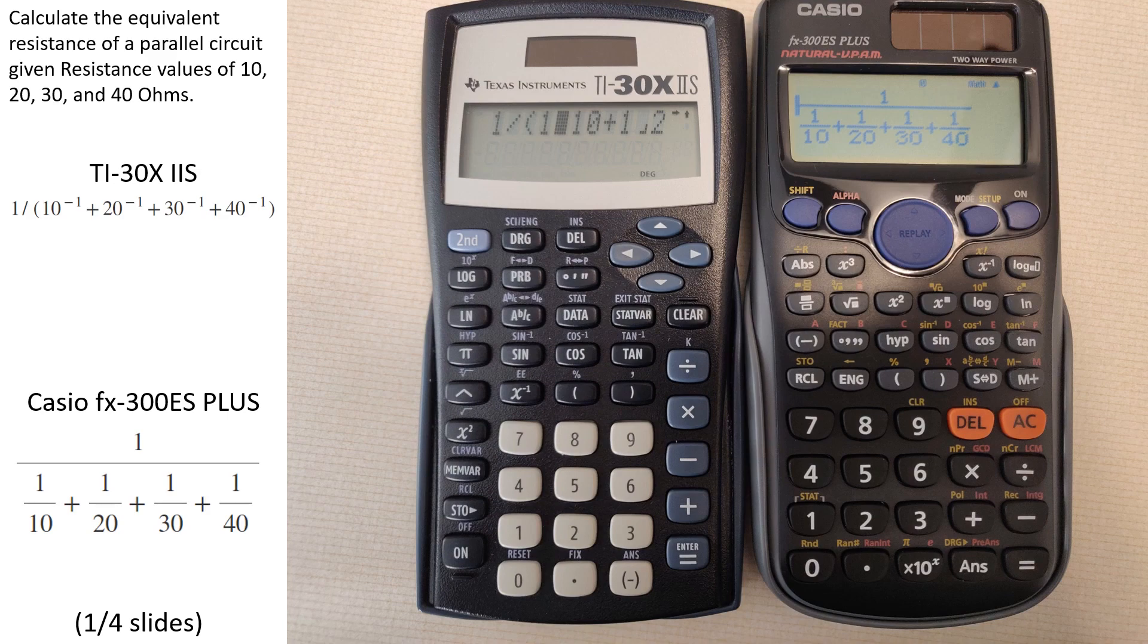This formula is used to deduce the equivalent resistance of a parallel circuit with multiple resistors on each branch. On the Texas Instruments calculator, it is significantly easier to use the negative one exponent, as you see in the formula, as opposed to using the one over the value of the resistor form that you see on the Casio calculator. The Casio can do this as well, however it's easier to check your formula against the reference material if it looks the same.